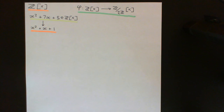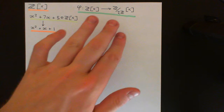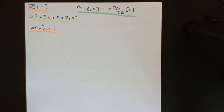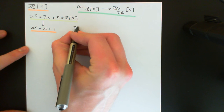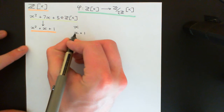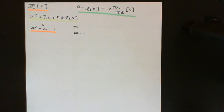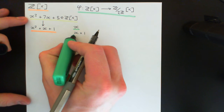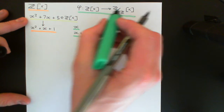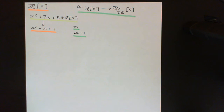What do degree-1 polynomials look like in (ℤ/2ℤ)[x]? There aren't many, since ℤ/2ℤ only has elements 0 and 1. The only two degree-1 polynomials are x (i.e., x + 0) and x + 1. Those are the only two degree-1 polynomials in (ℤ/2ℤ)[x] — far fewer than in ℤ[x].